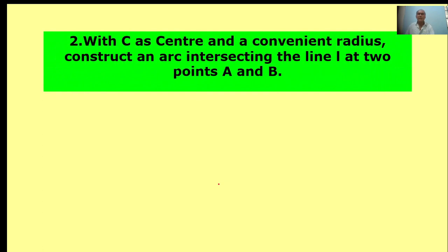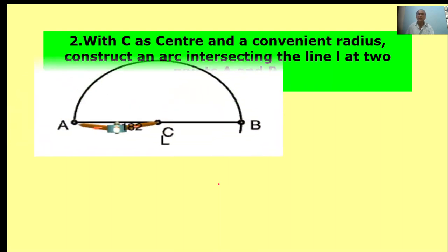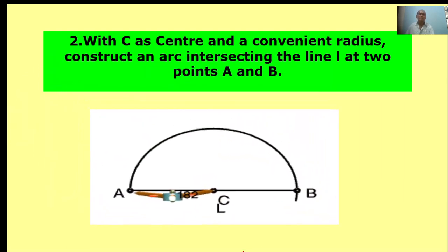With C as a center and convenient radius, construct an arc intersecting the line L at two points A and B. First, center point C. Take a convenient radius to draw one arc. This arc intersects at point A and point B.